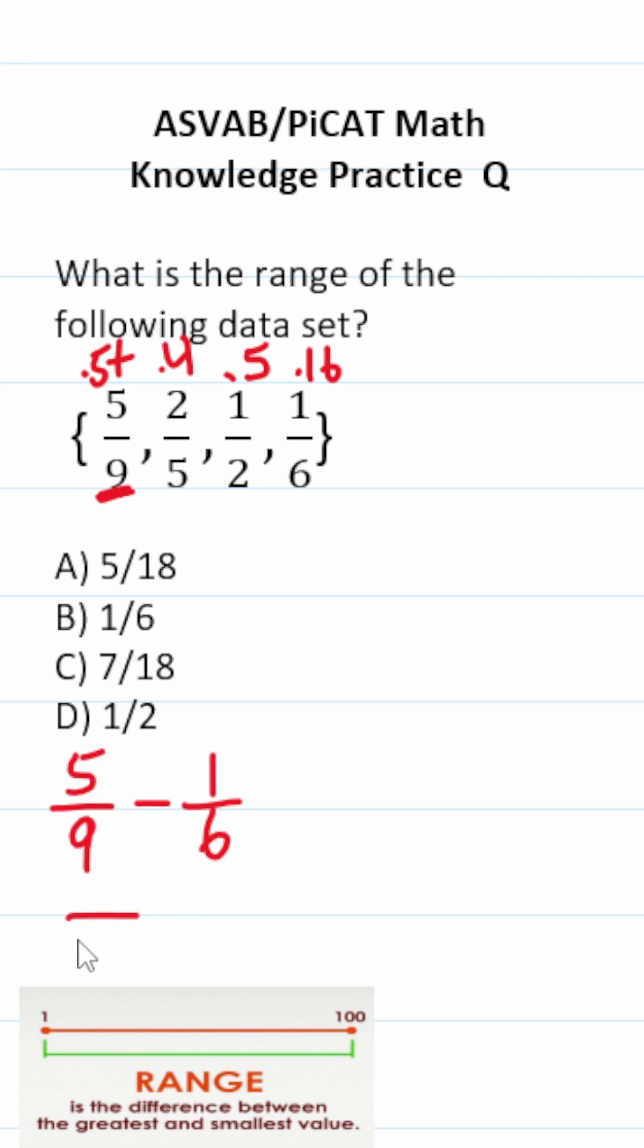In order to subtract fractions, they have to have a common or the same denominator. Both nine and six go into 18. To make nine 18, we multiply it by two. We also do that to its numerator. Two times nine is 18. Five times two is 10. To write six as 18, we multiply it by three. We also have to do that to its numerator. Six times three is 18. One times three is three.